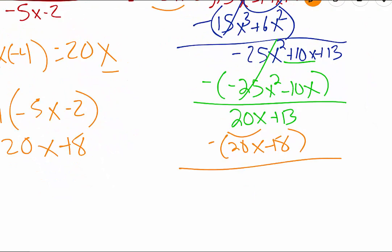When we do that subtraction, 20x minus 20x cancels. 13 minus 8 is a 5.